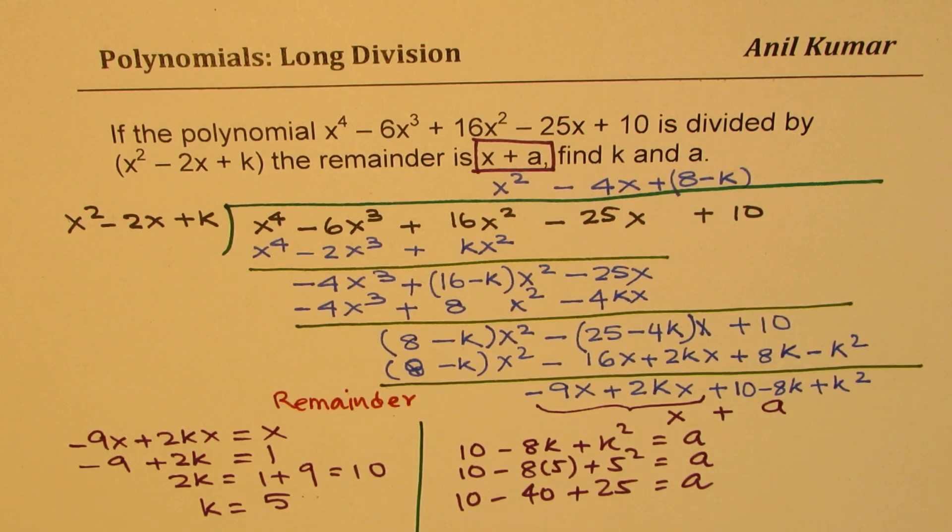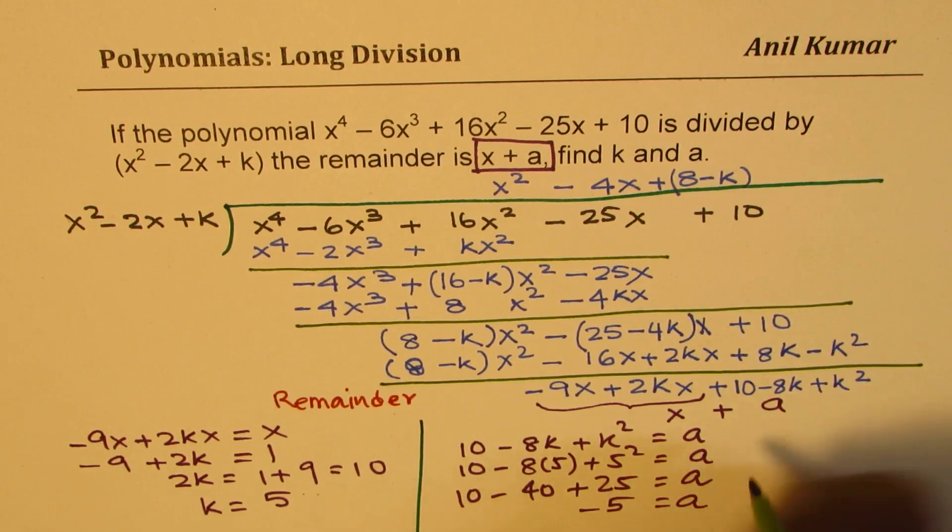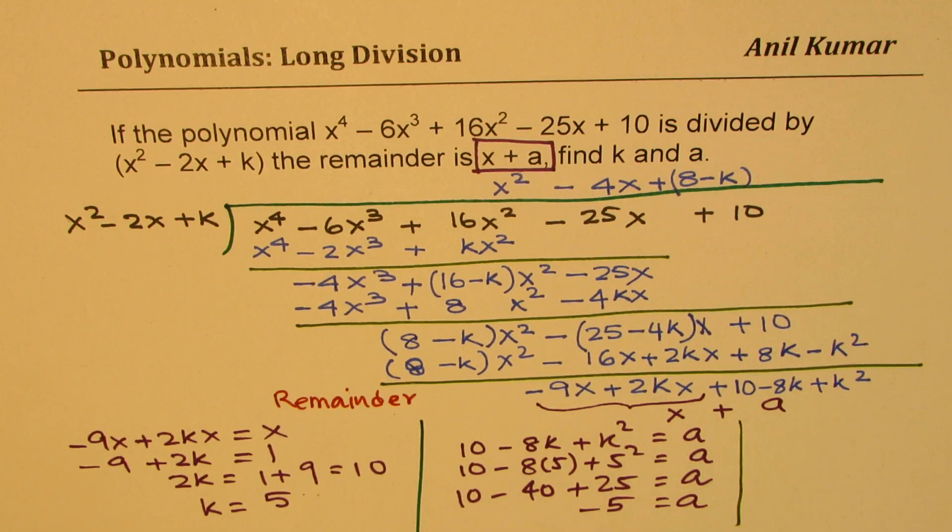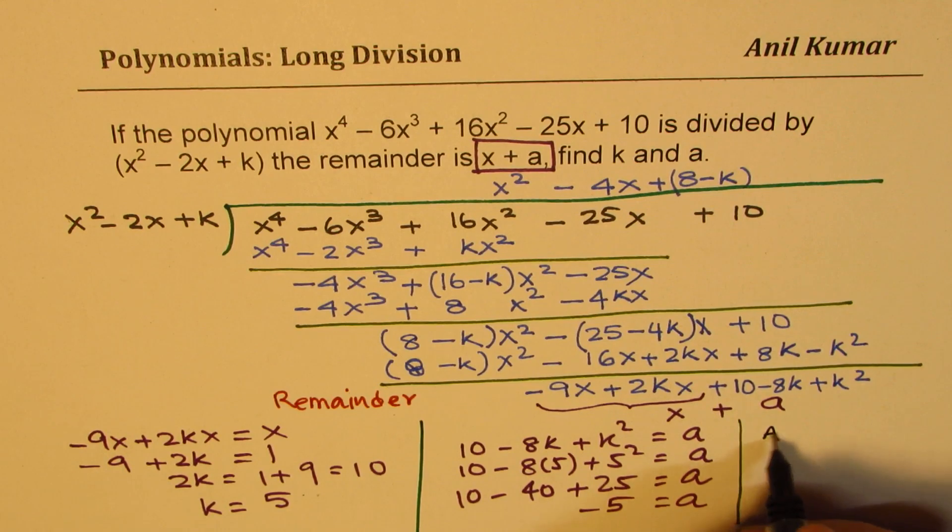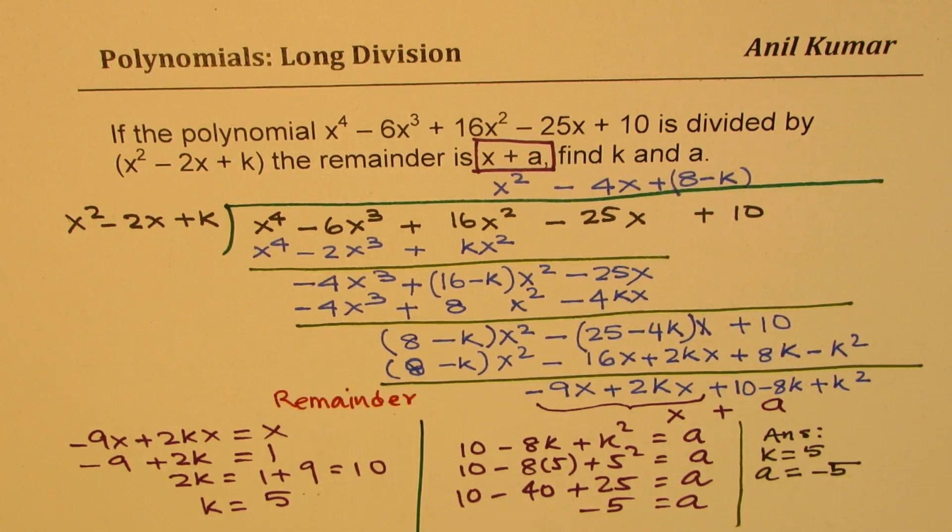Now 10 + 25 is 35. So we get -5 as a. So we get -5 equals to a. So that becomes our answer. Is that clear? So that is how this question can be solved. I hope you find it interesting and useful.